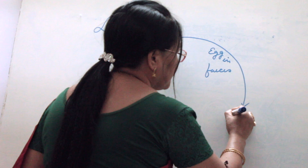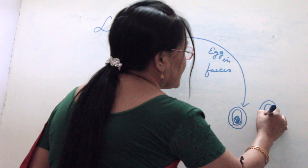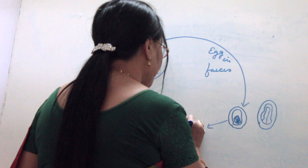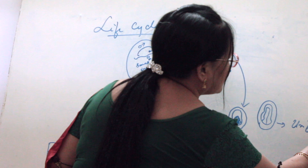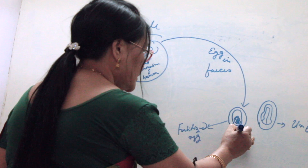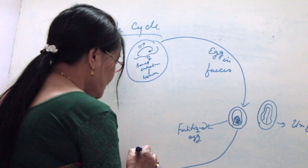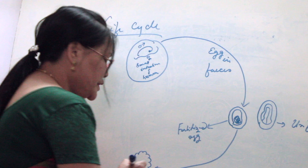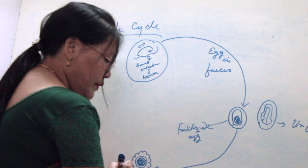There are two types of eggs: one is the fertilized egg and the other is the unfertilized egg. Under favorable conditions, these eggs can become infective after 18 days, or can live up to 10 years in the soil. That is why these eggs are very dangerous and harmful.